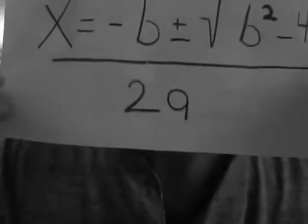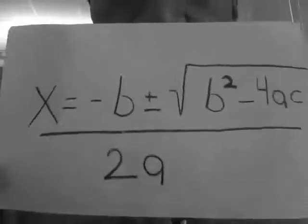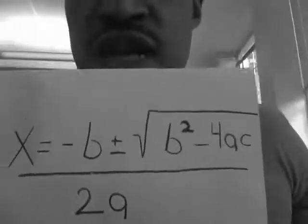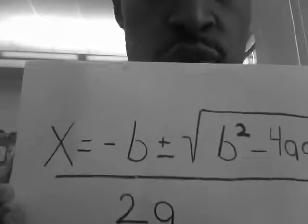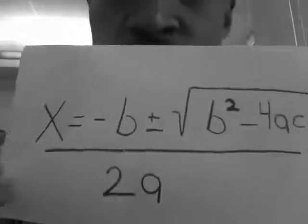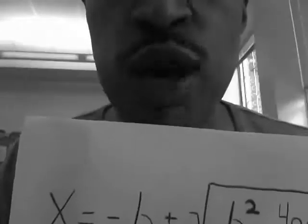Quadratic Formula. X equals negative B, plus or minus the square root of B squared minus 4AC, over 2A. Let's repeat it.